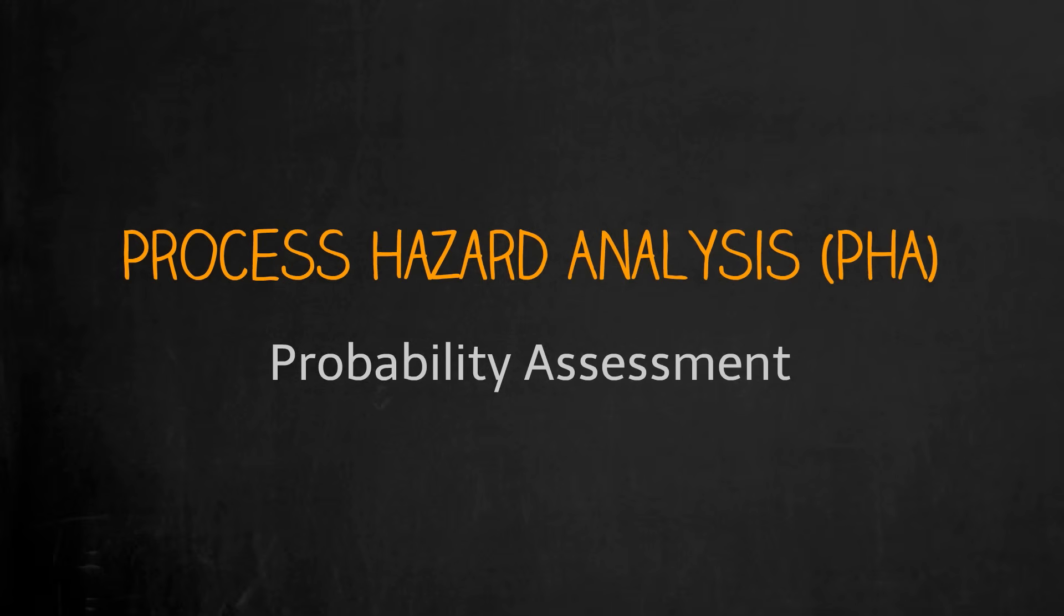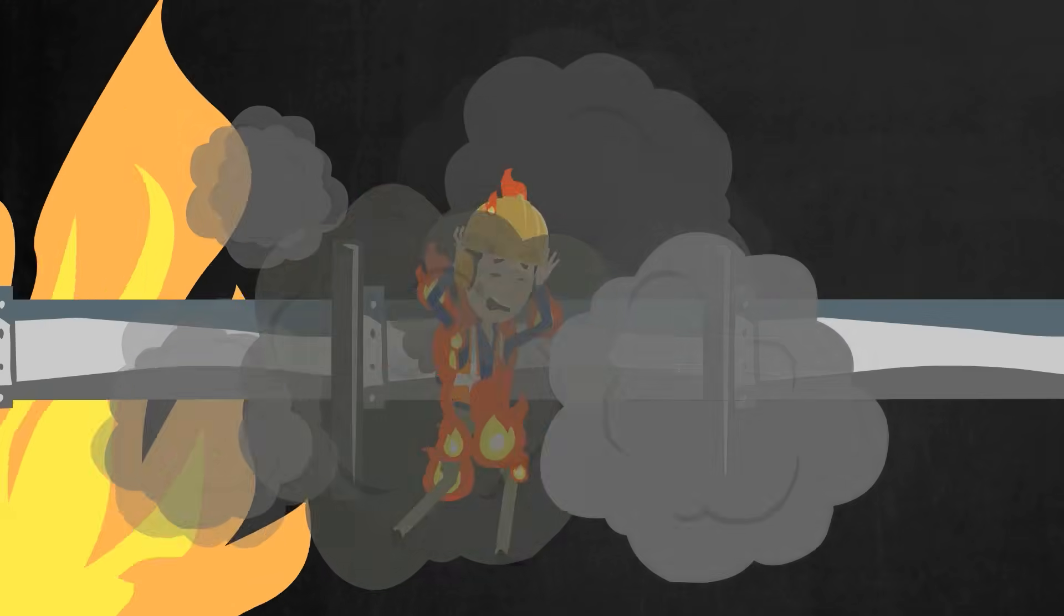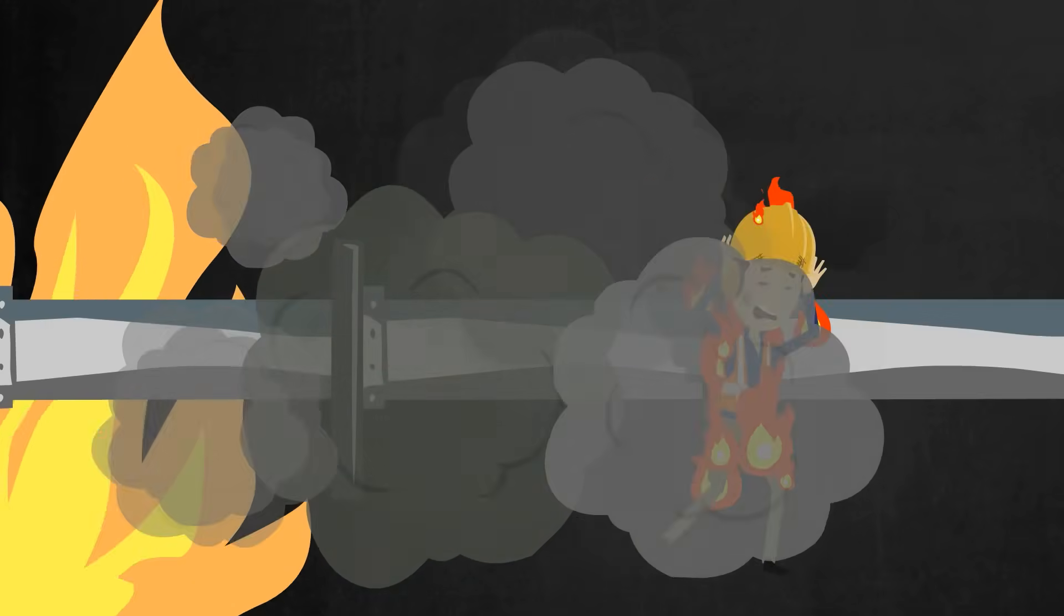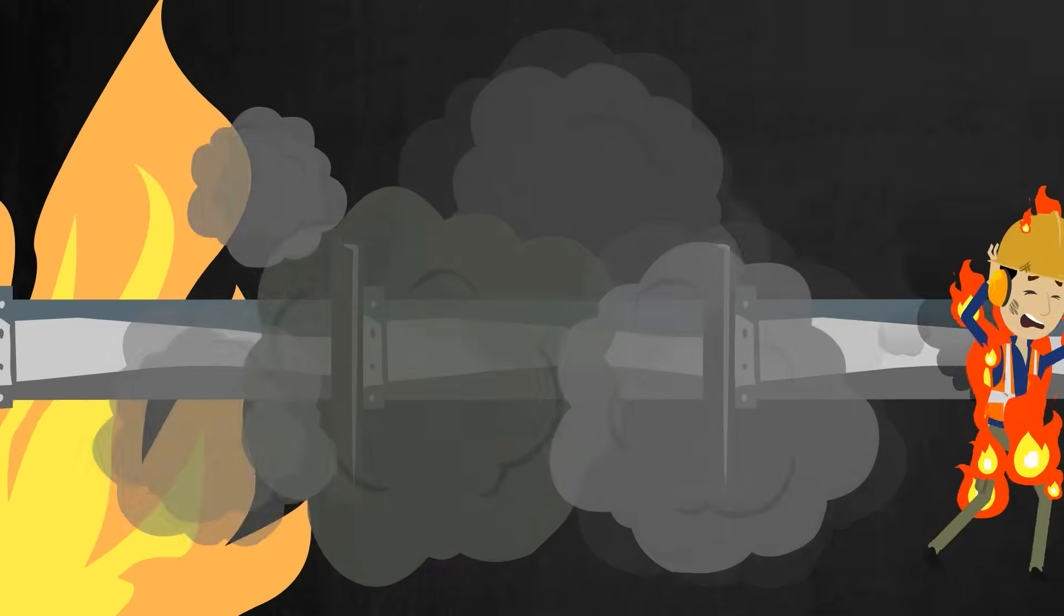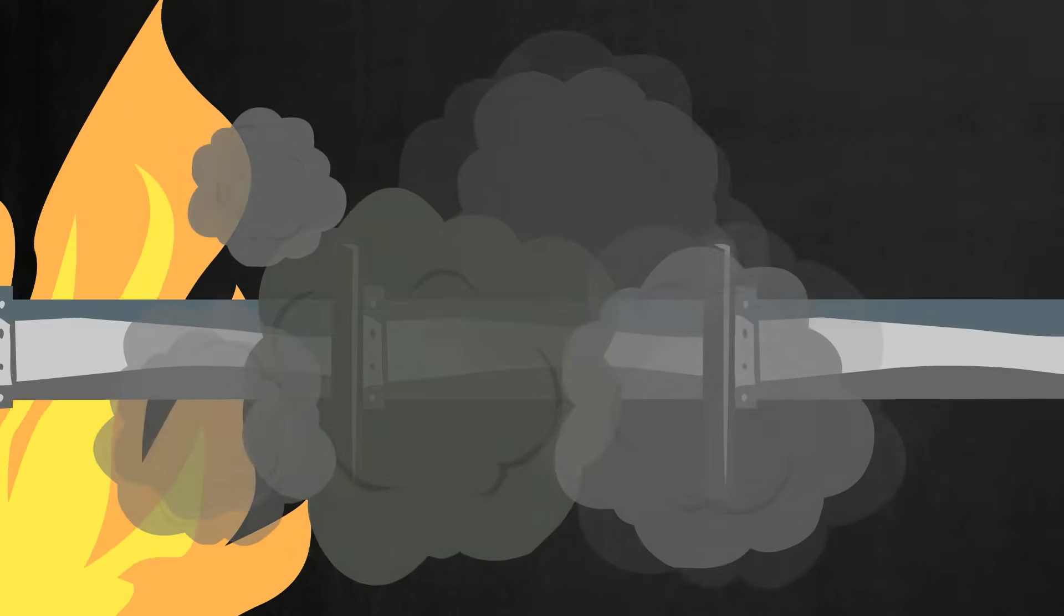With any oil and gas operation, there's always a risk with something going wrong. Equipment does fail over time and people do make mistakes, but we don't necessarily know when a hazard might occur. That is why we have passive safeguards ready and waiting to act.